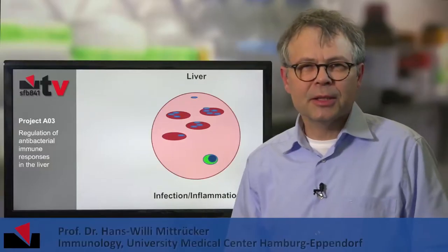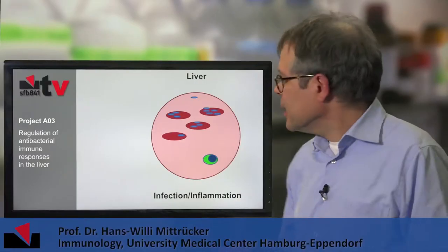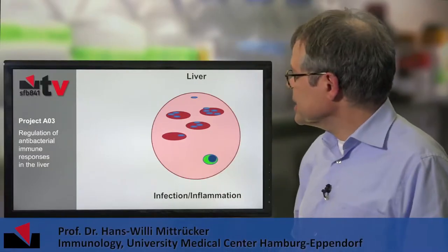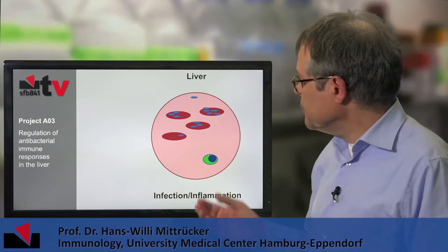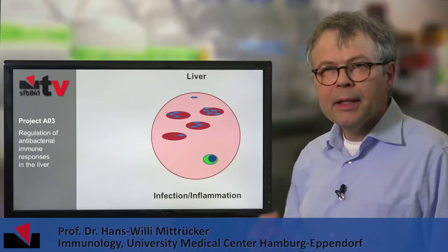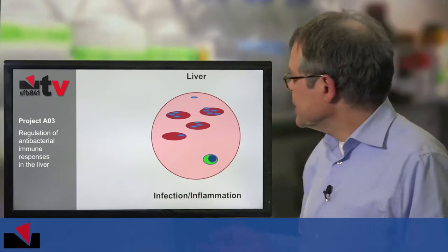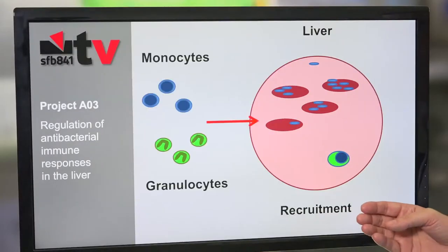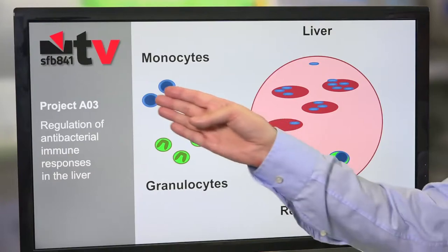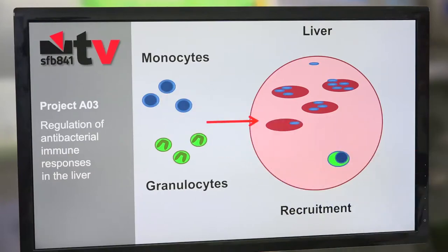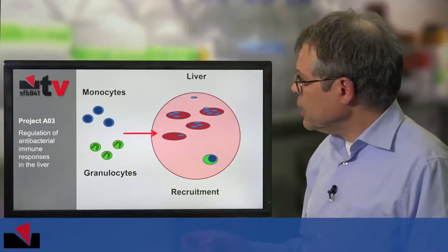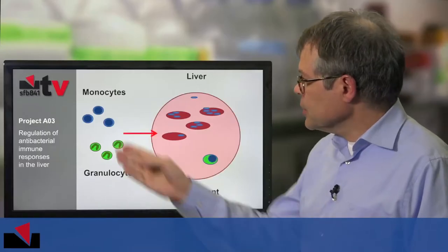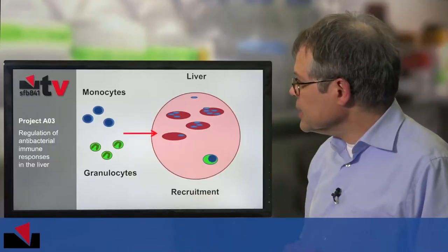During infection, bacteria and viruses replicate in the liver, but they also cause tissue damage. The immune system reacts by recruiting innate cells in the early phase. These are monocytes and granulocytes.